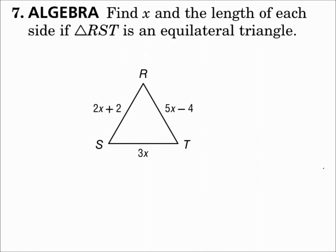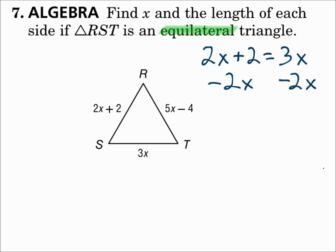Number seven: find x and the length of each side if triangle RST is an equilateral triangle. If it's equilateral, then all sides are congruent. So we can pick any two sides and make them equal each other, like 2x + 2 = 3x. Subtracting 2x from each side gives you 2 = x, so x is 2.